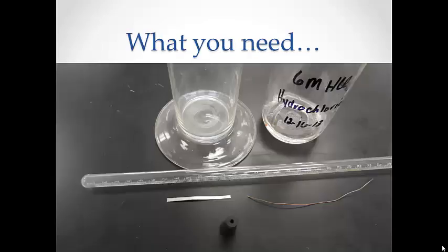For this procedure, you need a large graduated cylinder, a gas measuring tube, a length of magnesium, a length of copper wire, a one-hole stopper that will fit in the gas measuring tube, distilled water, and 6 molar hydrochloric acid.